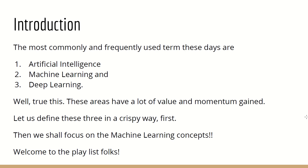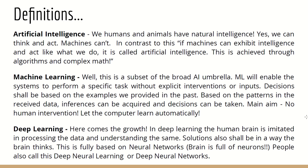We need to understand what these three are all about and where machine learning fits in. What is artificial intelligence? The term itself is telling: you, I, and animals have natural intelligence — we can act intelligently based on a situation and come to a decision. Machines cannot do that naturally. If machines can exhibit intelligence and act like humans, it is called artificial intelligence, achieved through complex algorithms and mathematics.